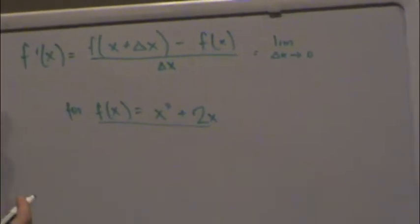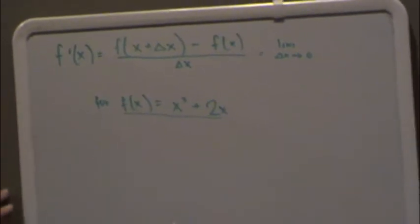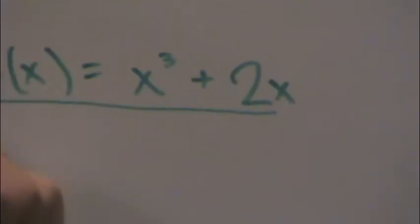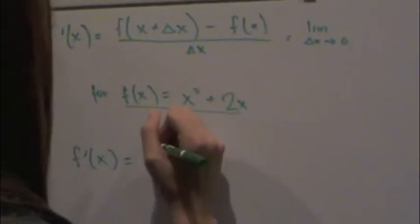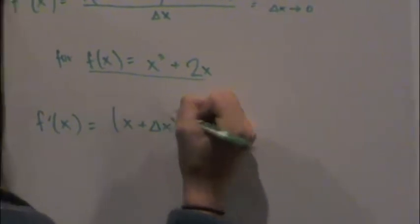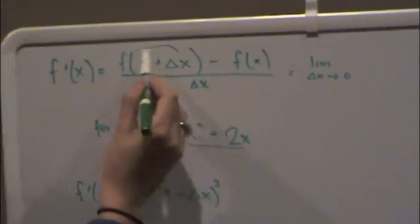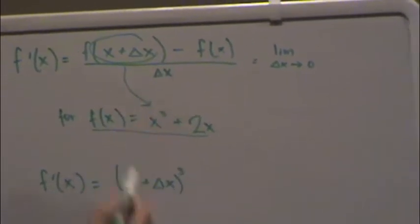we could plug in x plus the change in x for x cubed. So f prime at x is x plus the change in x cubed. You're plugging this in for this because it's f at x plus the change in x.